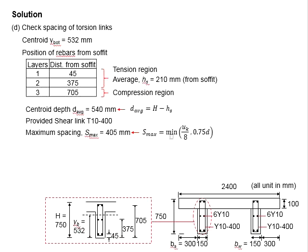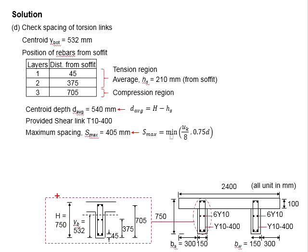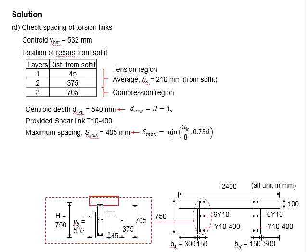With the given information — concrete cover 30 mm and shear link size 10 mm — you are able to determine the distance from the soffit as calculated here. If you find it difficult, you may always sketch the diagram to work out the solution. Based on the diagram, four reinforcement bars are considered in tension while the other two are in compression. We then need to determine the centroid of the four tension reinforcement bars.